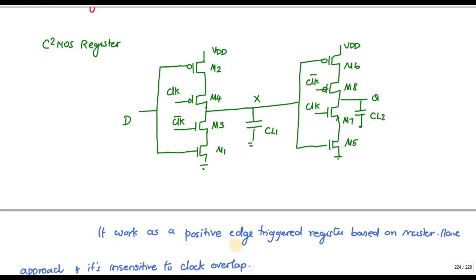Now let me implement a positive-edge-triggered D register using C-squared CMOS. For a positive edge-triggered register, I provide clock-bar to M3 and clock to M7. This logic is based on the master-slave approach, and we will see how it is insensitive to clock overlap.